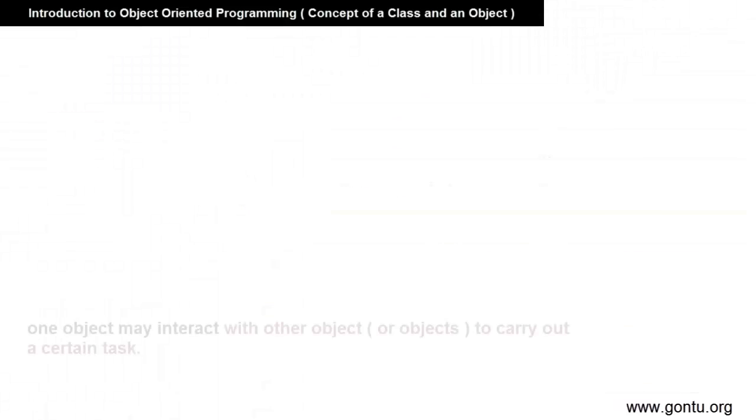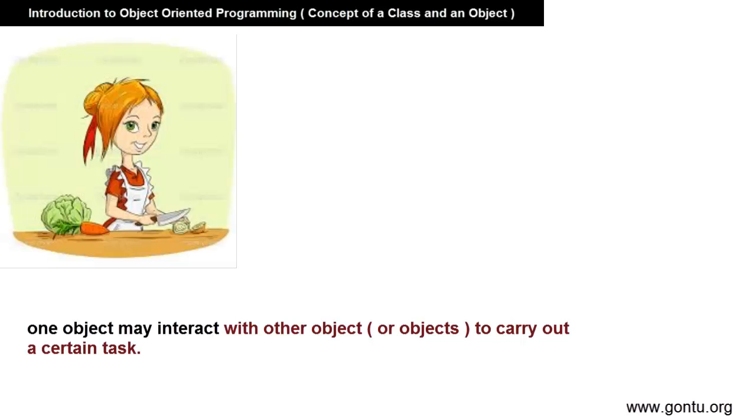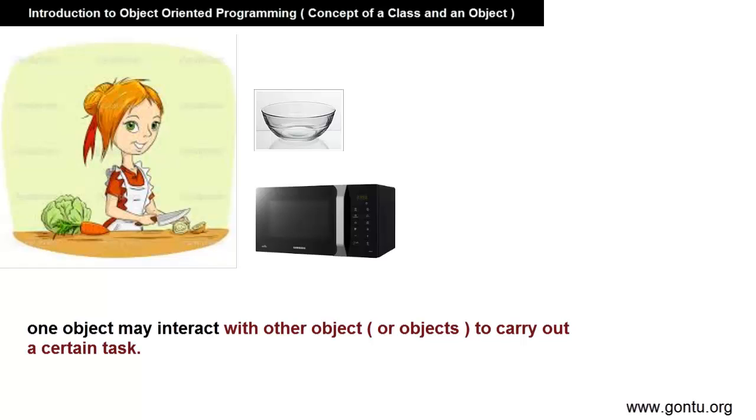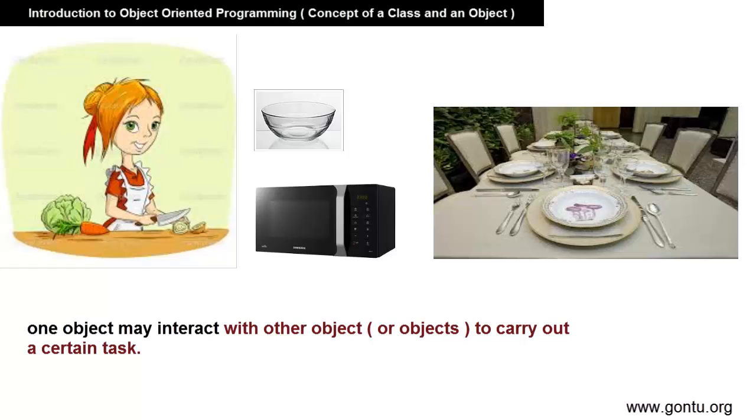One object may use another object for carrying out a certain task. For example, in order to prepare a vegetable dish, a person object uses a knife object for cutting purpose and then uses a bowl object along with a microwave object for cooking it and in the end uses many plate and spoon objects for serving purpose.